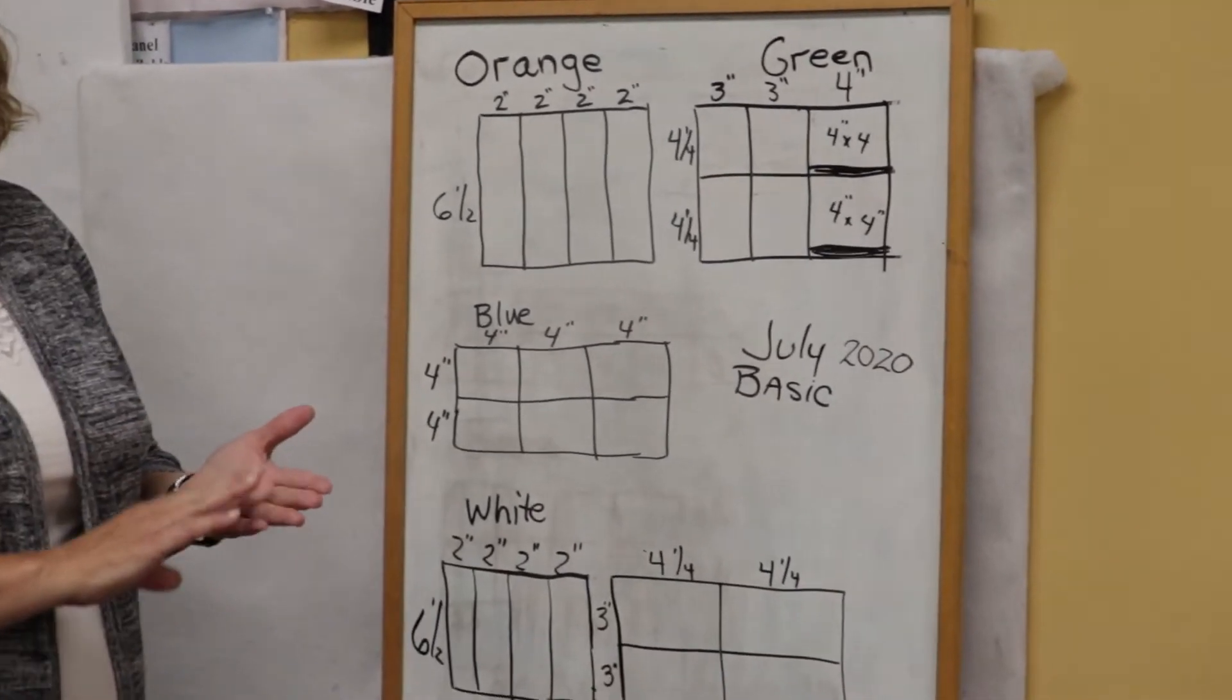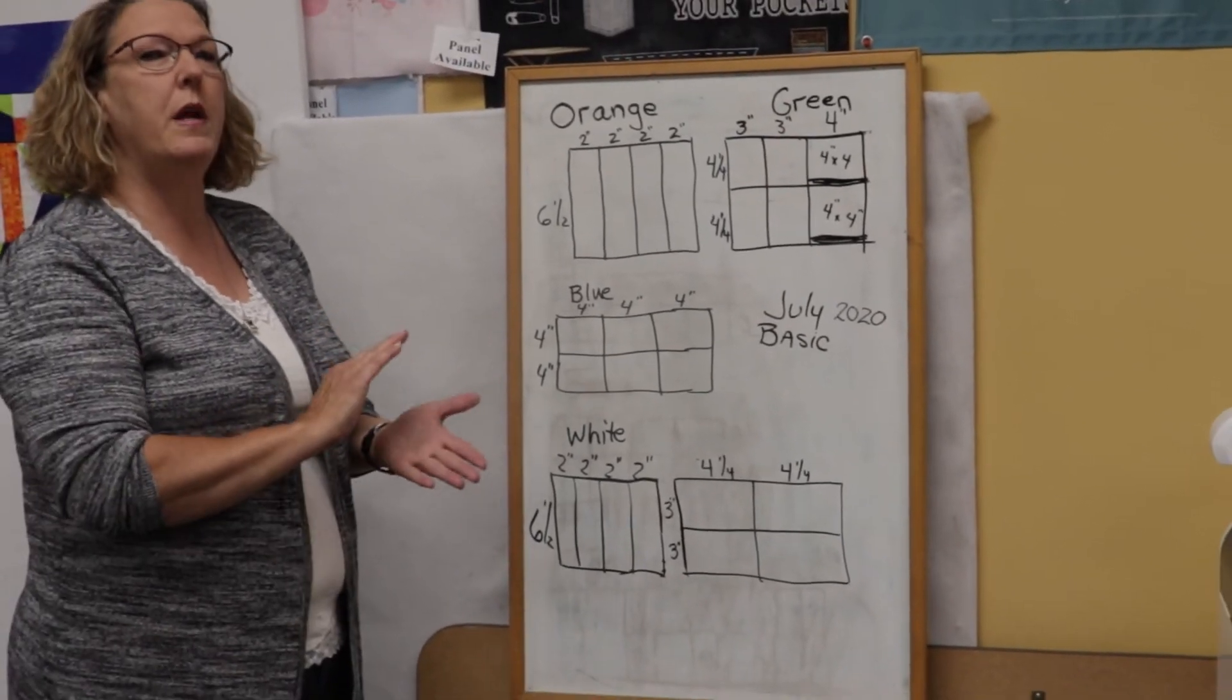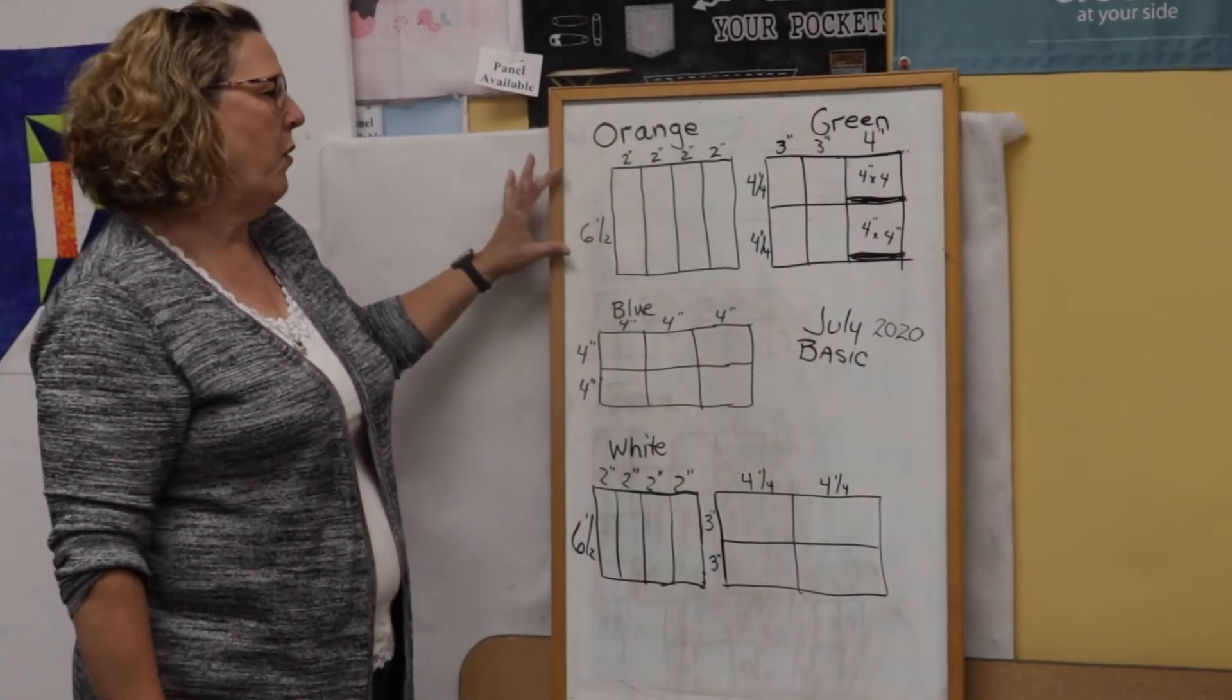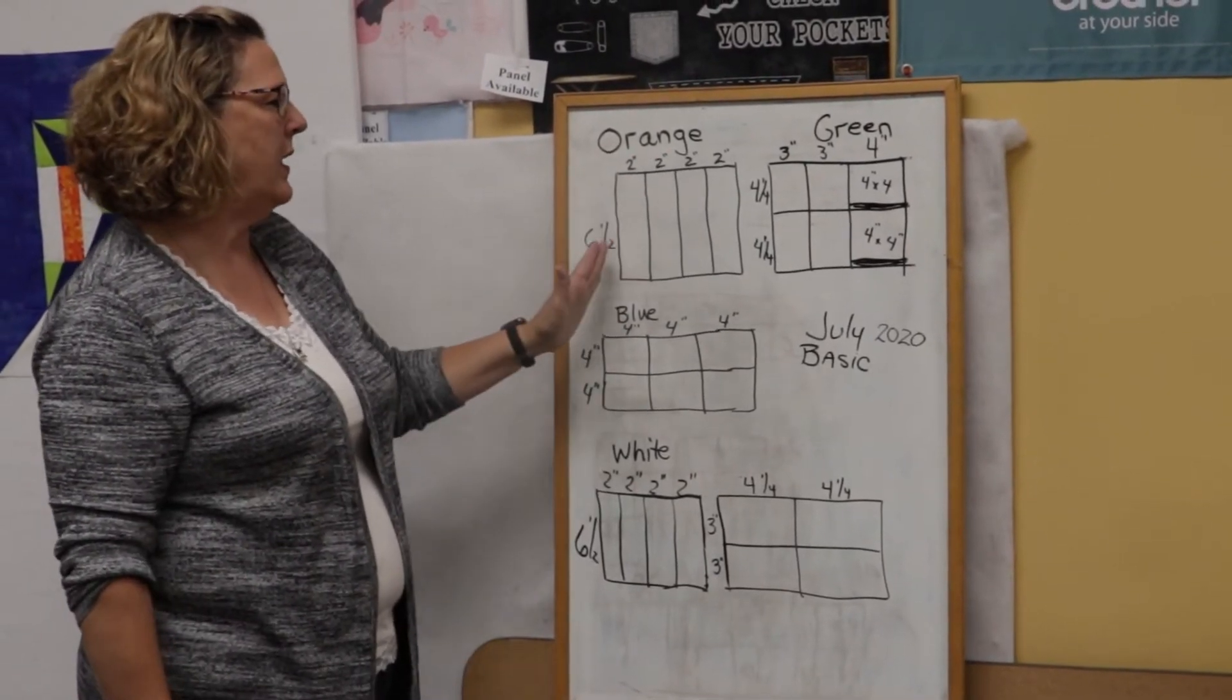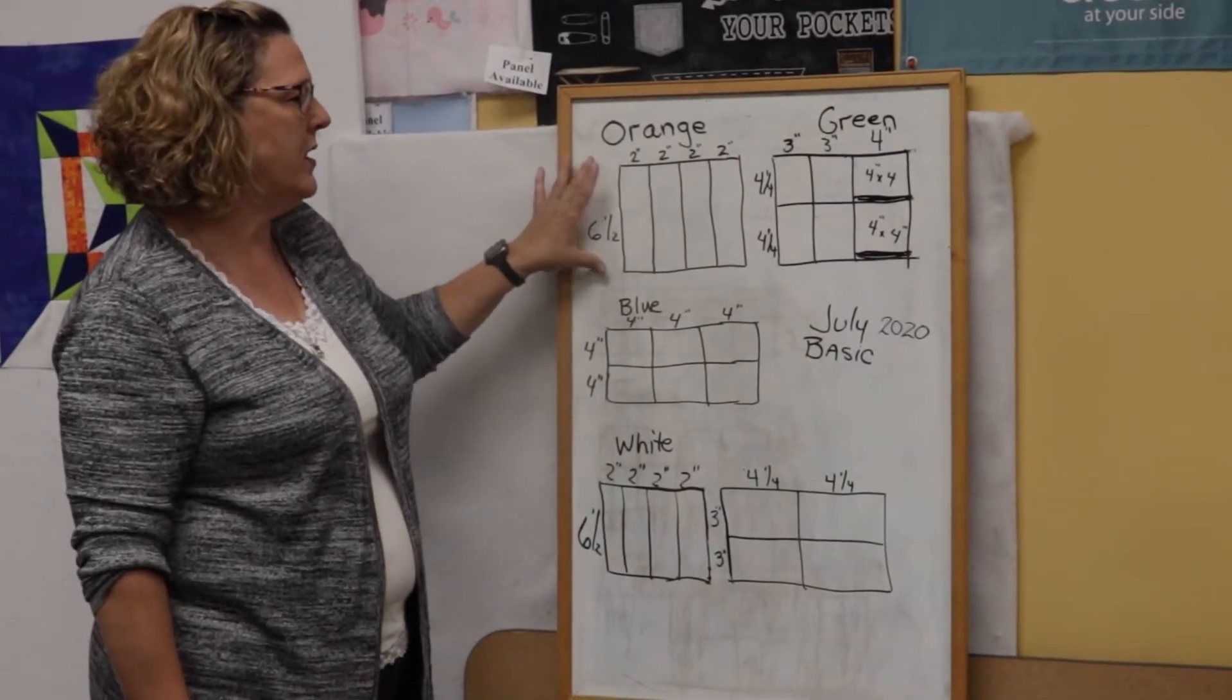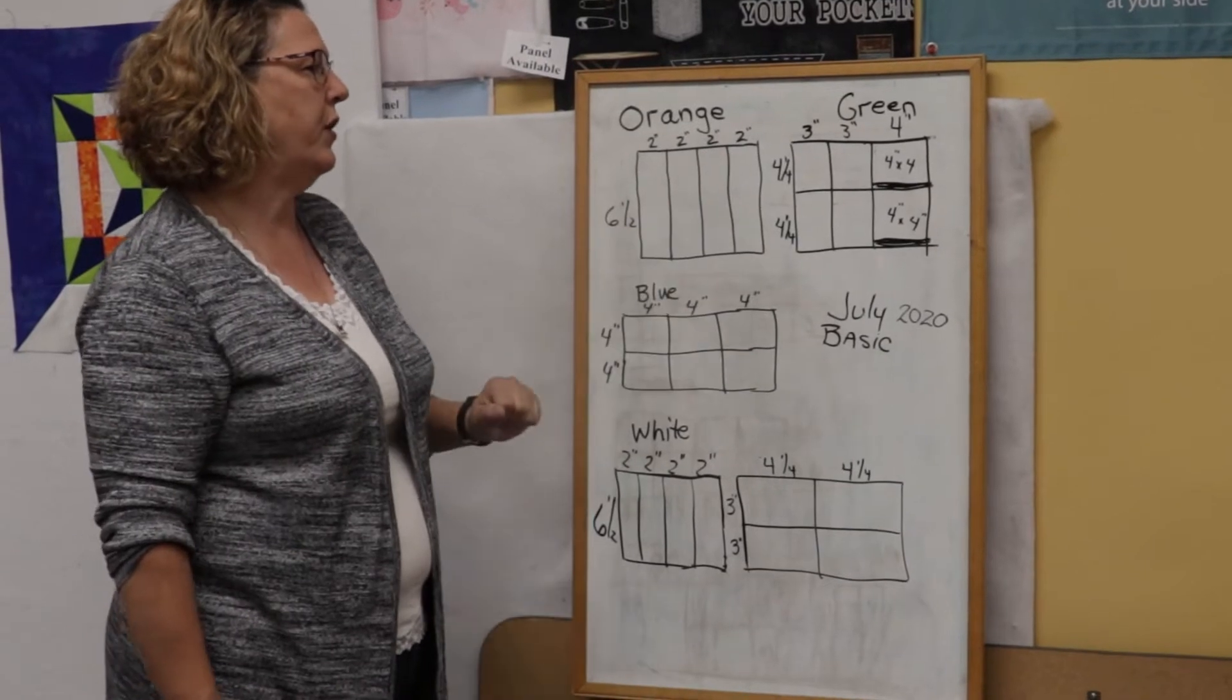Let's go through the cutting a little bit on our kit. Always make sure that you put Best Press on your kit's fabrics and iron them before you cut anything. So the orange is very simple. All we did was cut our piece going across 6½ inches wide. And then we're going to cut it into 4 2-inch strips.